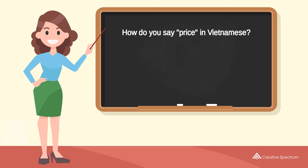How do you say 'price' in Vietnamese? Zha. Try to pronounce the word. Zha. Repeat the word. Zha.